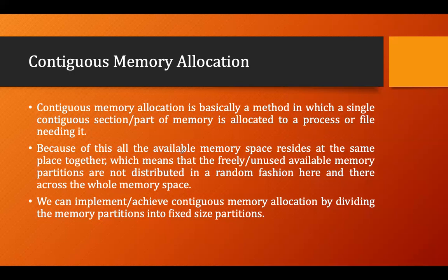Because of this, all available memory space resides at the same place together, meaning free and unused memory partitions are not distributed randomly across the whole memory space. We can achieve contiguous memory allocation by dividing memory into fixed partitions or by using variable size partitions.